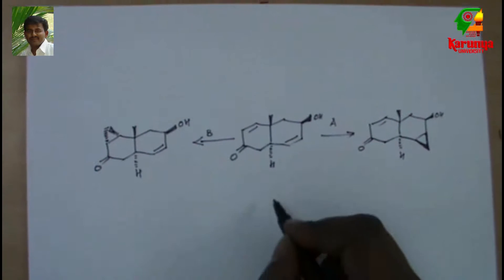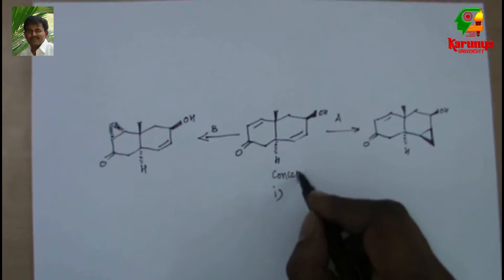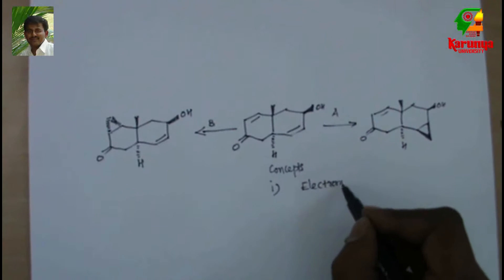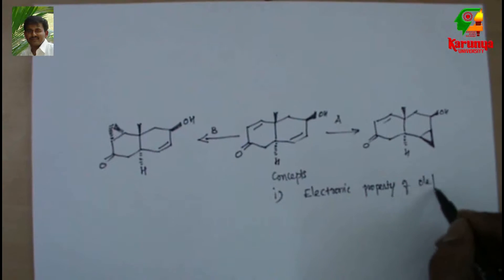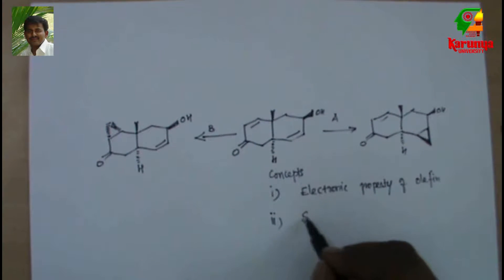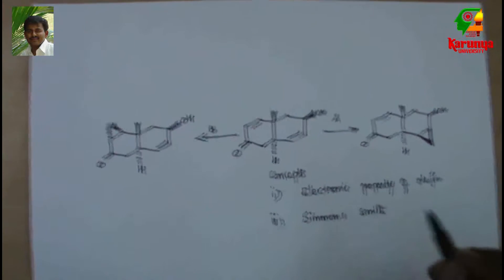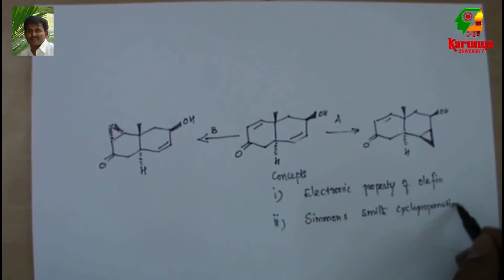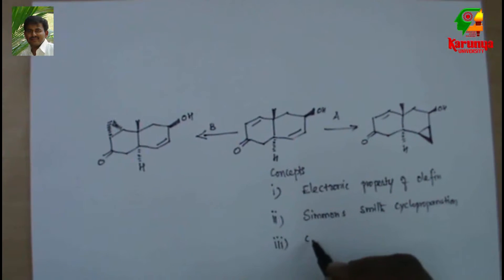In order to solve this, you should know three concepts. The first one is the electronic property of olefin. The second one is Simmons-Smith cyclopropanation. The third one is the Corey-Tchaikovsky reaction.